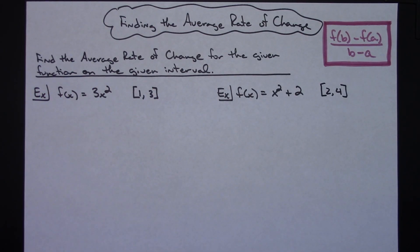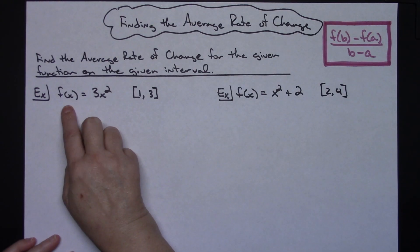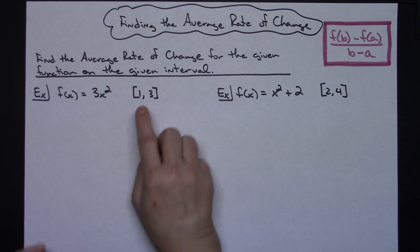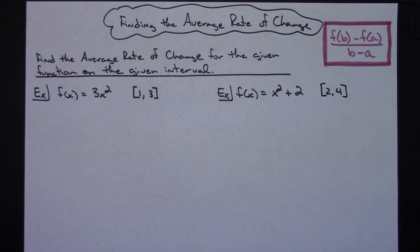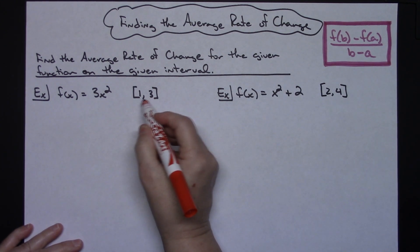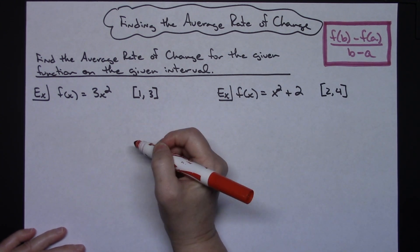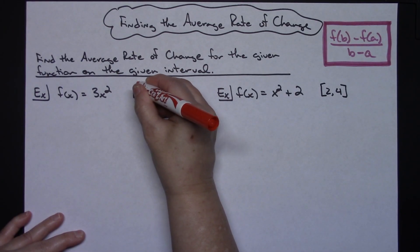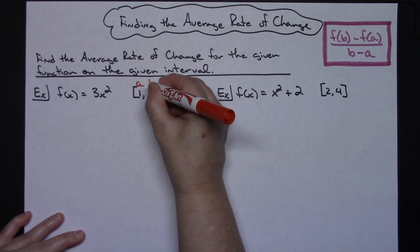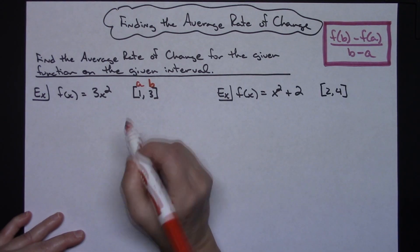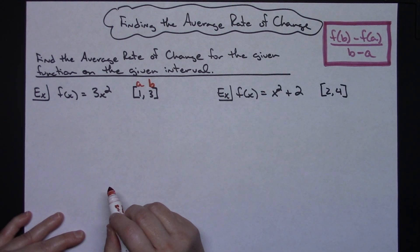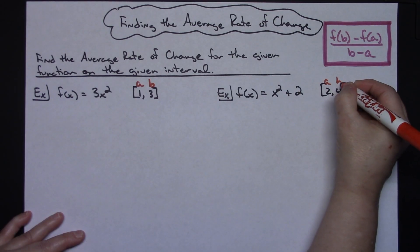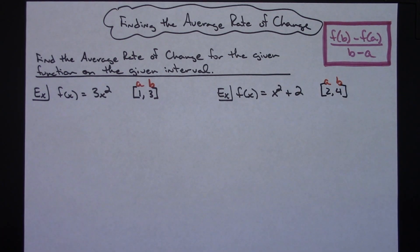In this first example we're going to look at the function F of X equals 3x squared on the interval from 1 to 3. Now if you've worked a lot with these intervals, most people generally associate the first value with A and the second one with B. So A is 1 and B is 3.